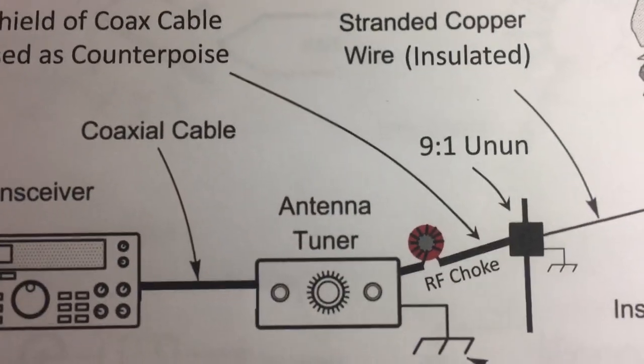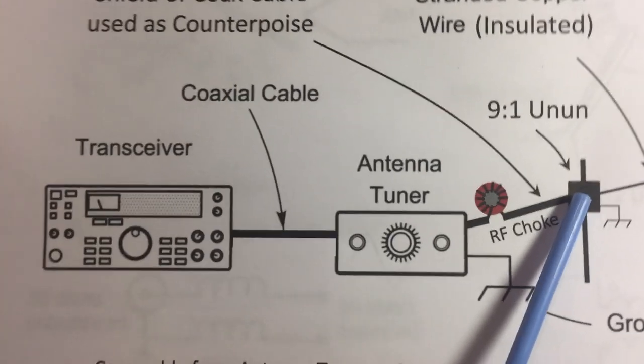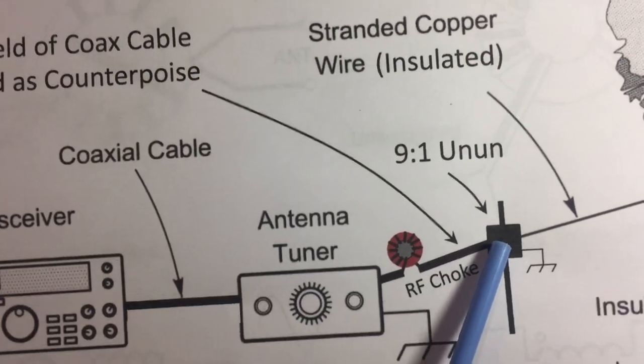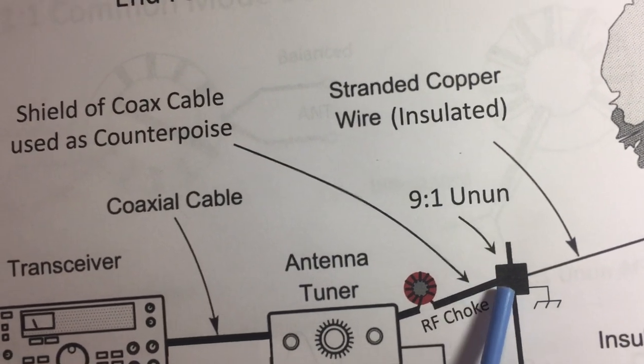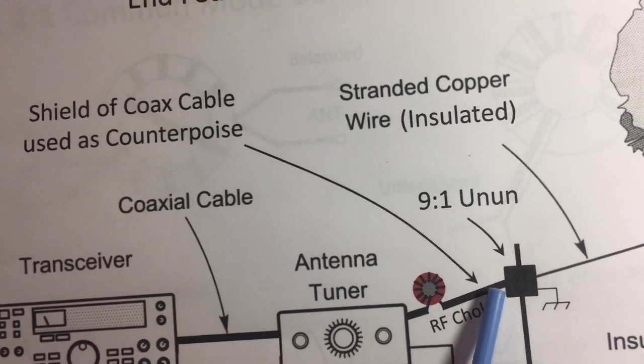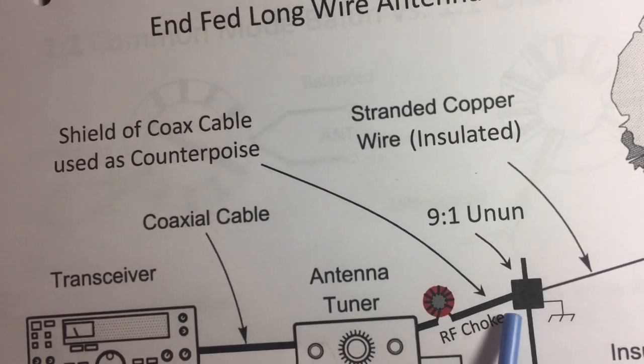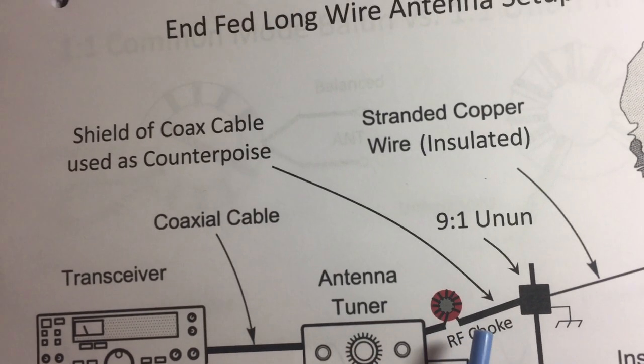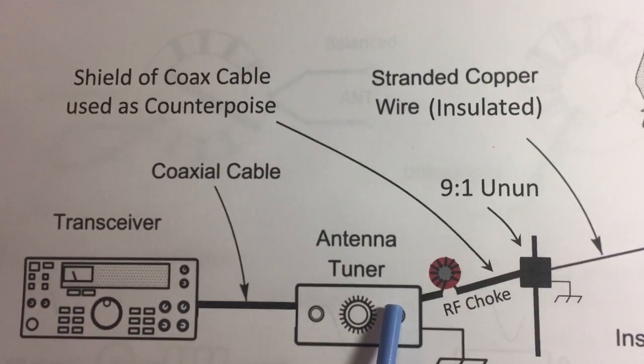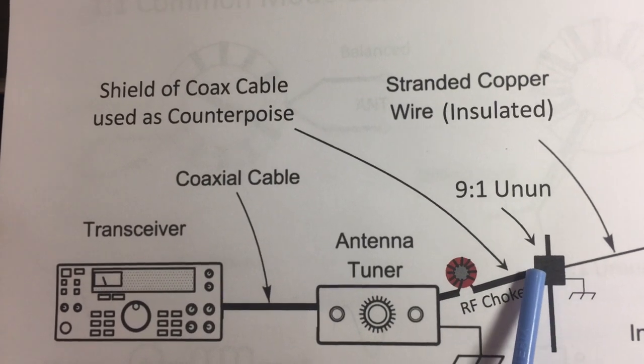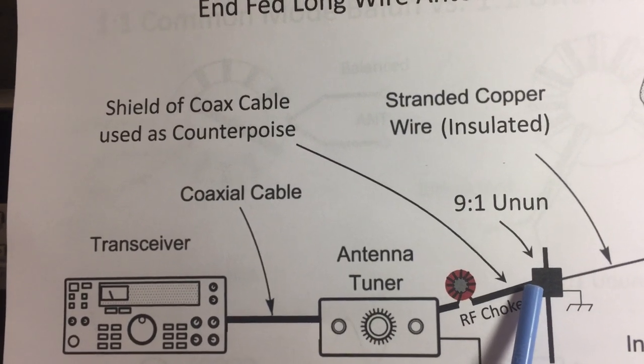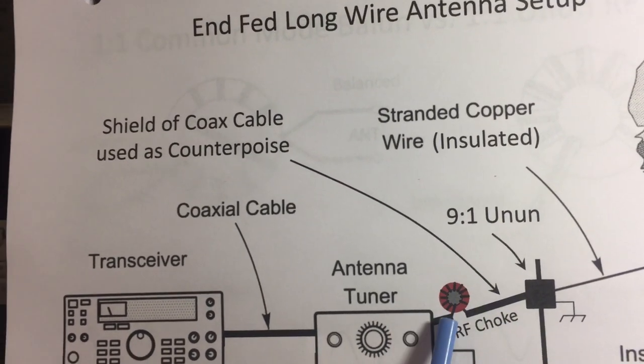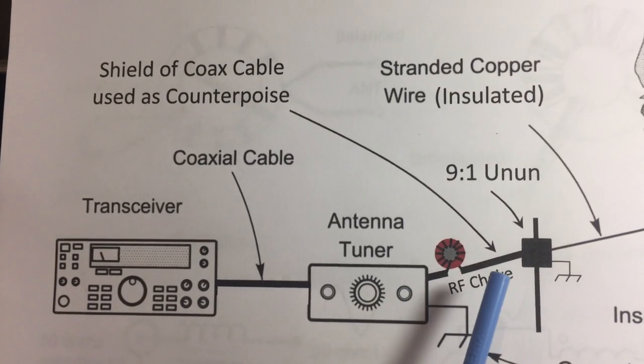Here's the nine-to-one un-un. I'm not using a counterpoise off the grounding stud, I'm using the RF shielding. So I'm going to put the RF choke after the shielded coax, basically in line with my antenna tuner. I don't want to choke out the RF energy on the shield because I'm using that as the counterpoise, so I choke it out right before it enters my equipment.